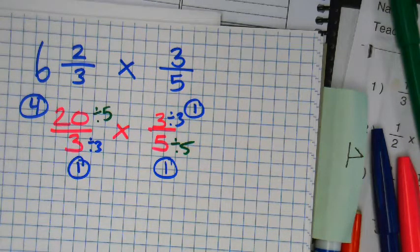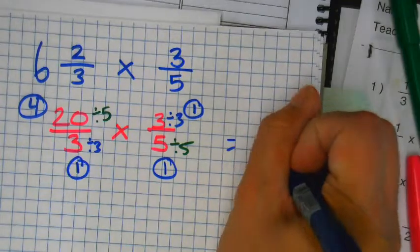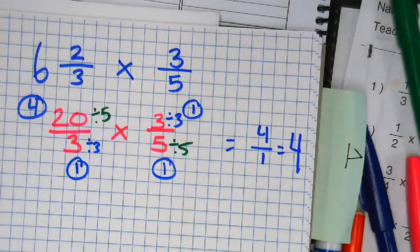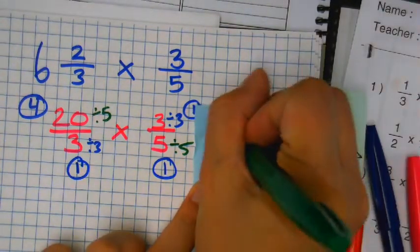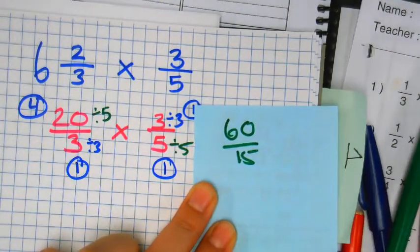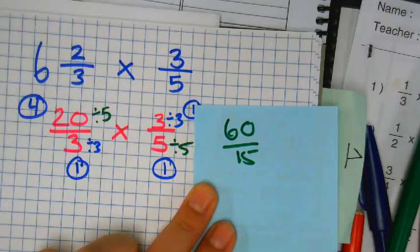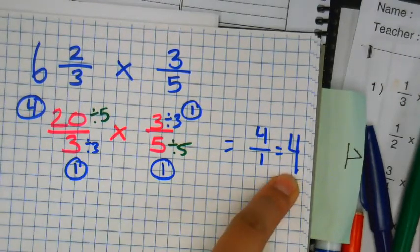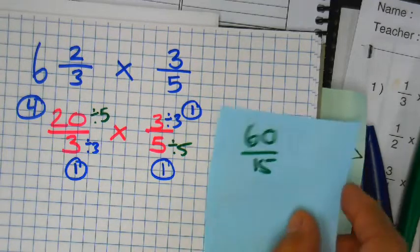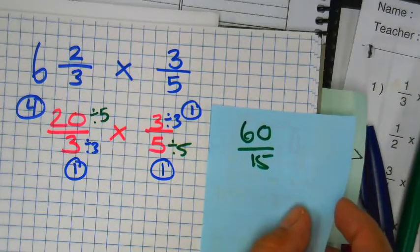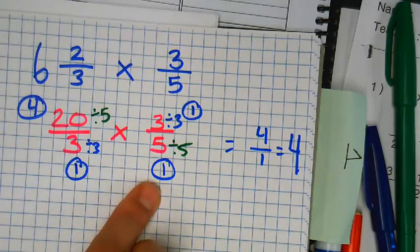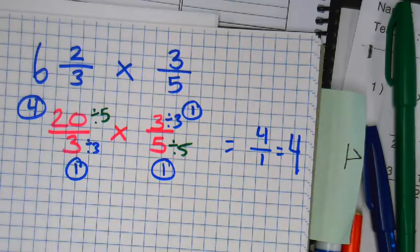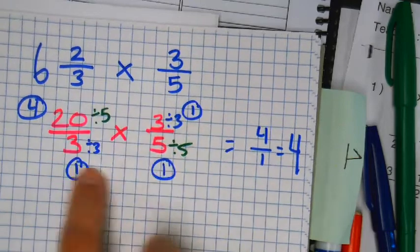Now let's multiply everything we've circled. If you didn't simplify you would get 60 over 15. It seems like a lot more work but you end up with an easier answer — instead of dealing with bigger numbers you might mess up, you're making the problem easier. Got it?